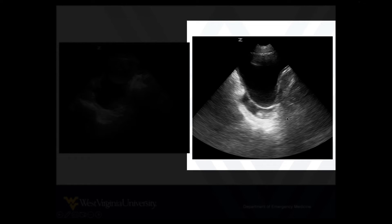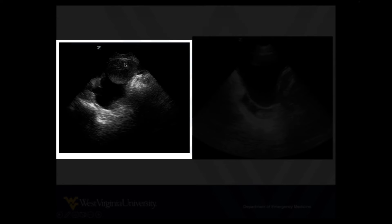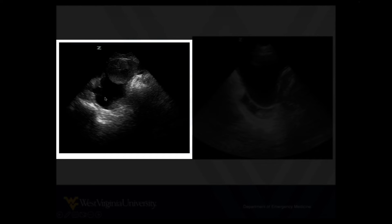When you get to the pelvis, fan through and examine the bladder entirely — look for fluid, usually behind it, but depending on where you're slicing the view, it could be on top of it. In females, identify the uterus and look for blood behind the uterus. And that's what you see here — uterus, fluid behind.